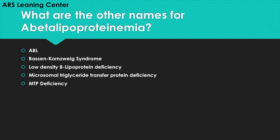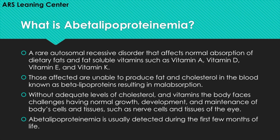What are the other names for abetalipoproteinemia? The other names for abetalipoproteinemia are ABL, Bassen-Kornzweig syndrome, low-density B-lipoprotein deficiency, microsomal triglyceride transfer protein deficiency, and MTP deficiency.